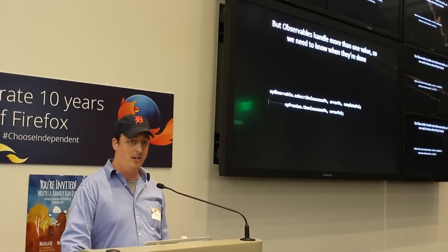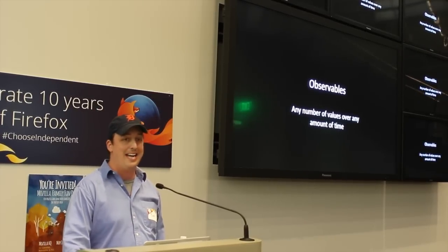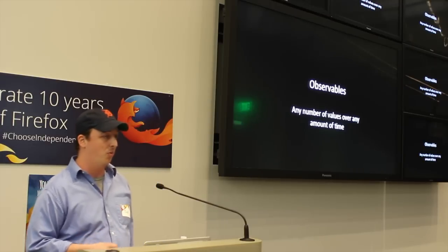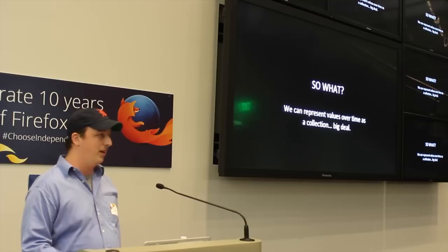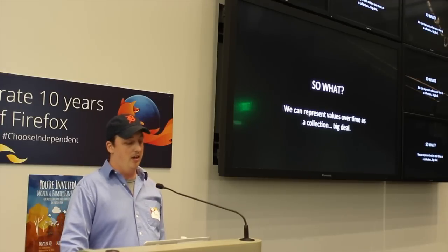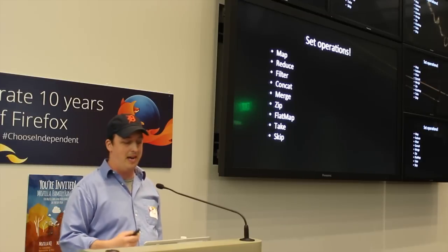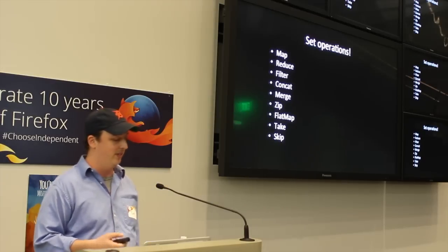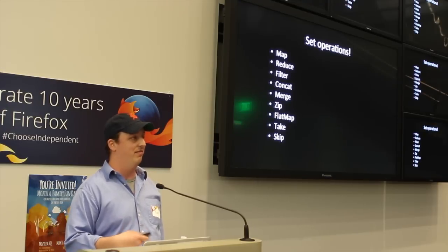Back to observables — there are any number of values over any amount of time. It could be arrays, which are a number of values that you represent over a relatively instant amount of time. Or it could be events from a web socket or mouse input or what have you. All can be represented with observables. So, congratulations — I just took asynchronous code and made it into a collection of things. What can I do with it? It's actually pretty cool because you can do set operations — your map and reduce and filter, as well as other things from libraries like Lodash or Underscore, where you can zip, flatten, flat map, take, skip from these collections. Now they're not just arrays — these are actually events that you're able to operate on this way.